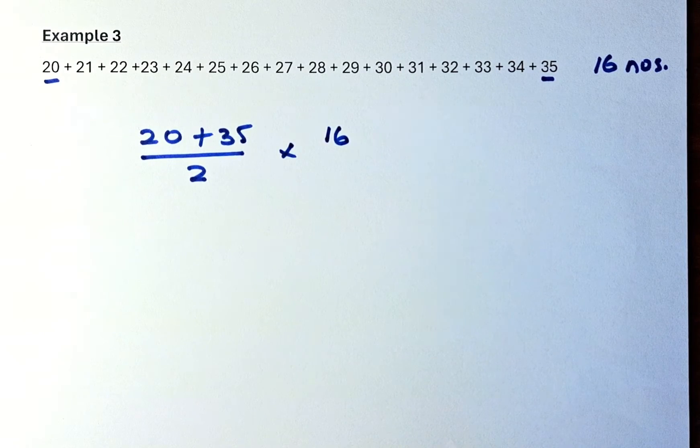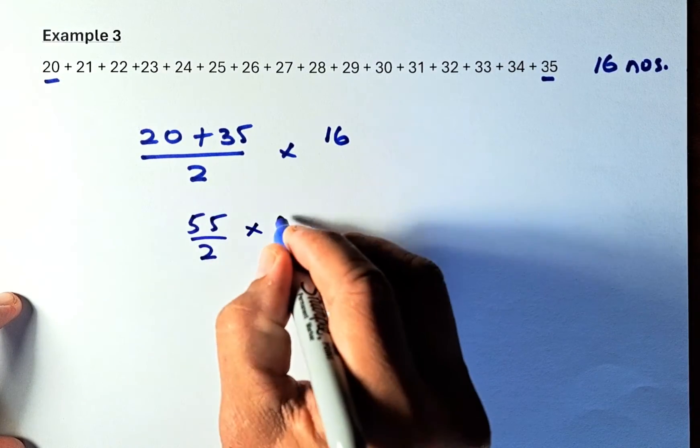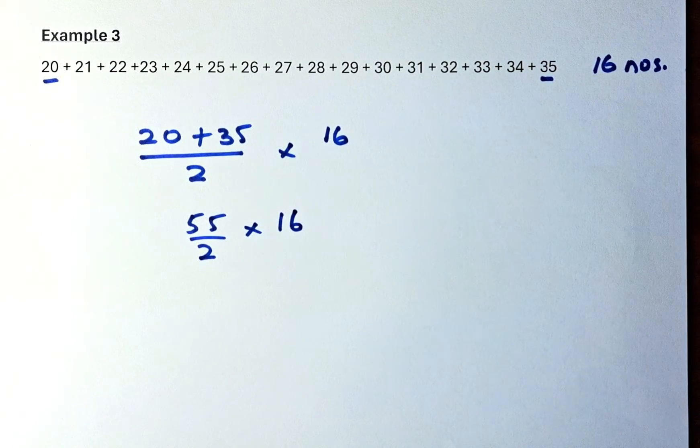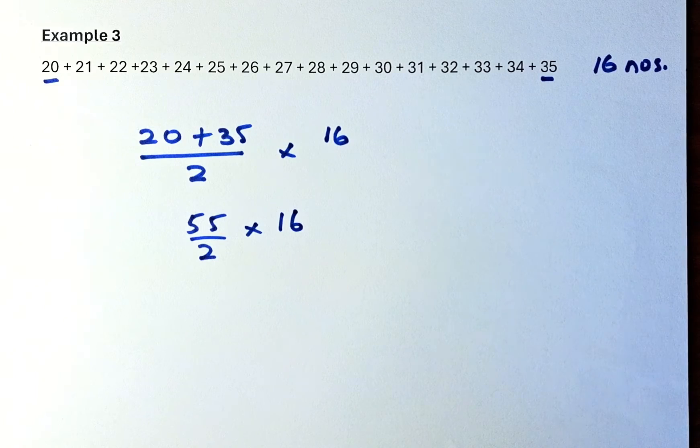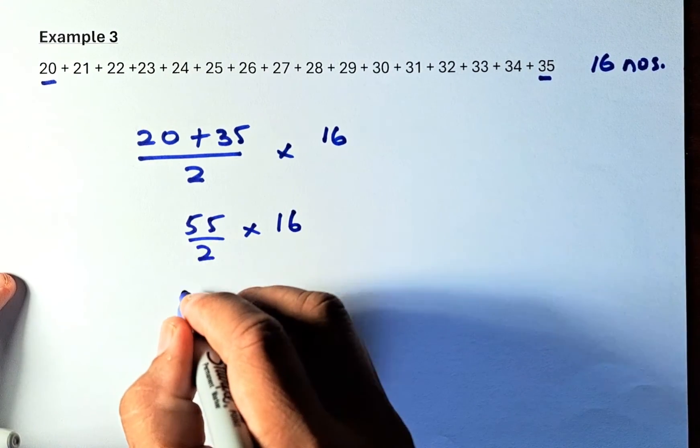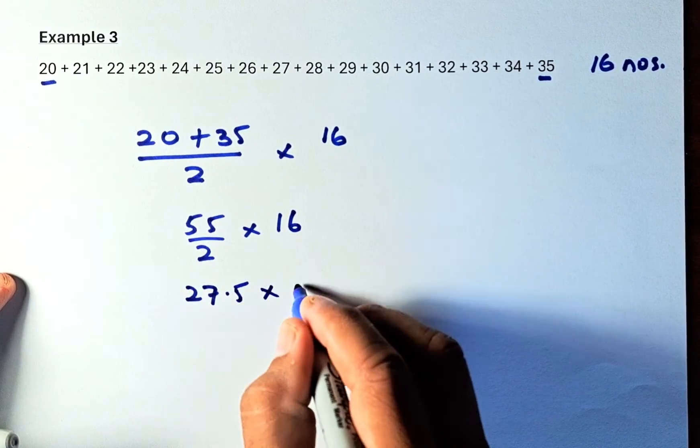So 20 plus 35 is equal to 55. 55 divided by 2 times 16. So if you are not good in using calculator, so you can actually use the calculator, so it's the same as you can make it as 27.5, 55 over 2 times 16.